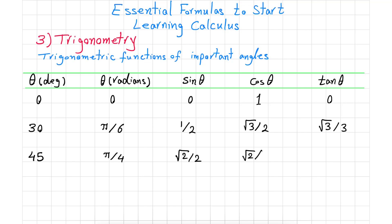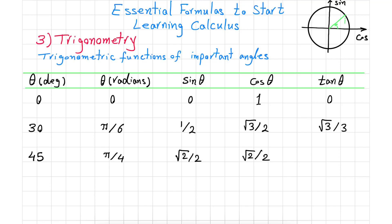The reason sine and cosine of 45 degrees are equal is visible on the unit circle. Looking at the circle, this is the cosine axis and this is the sine axis. At 45 degrees, if you project the point on the circle onto each axis, you get a square, which gives √2/2 for both the cosine and sine values.